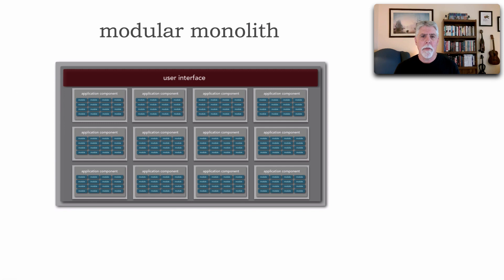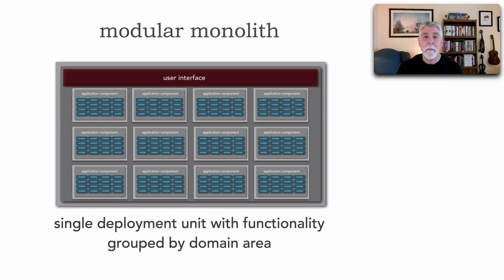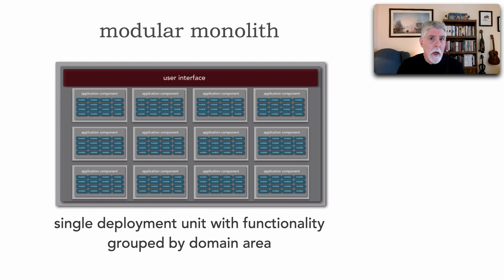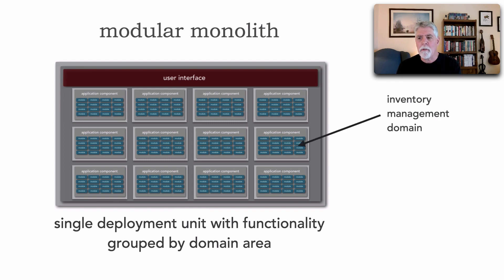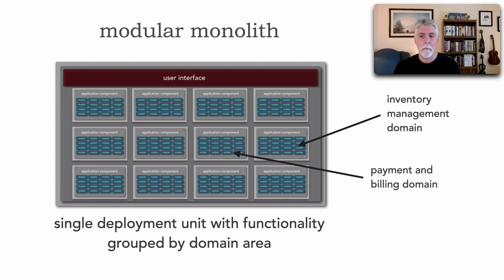The modular monolith is best described as a single deployment unit — all of the code is deployed as a single unit of software — but with functionality grouped by domain area. As you remember from the prior lesson, the layered architecture grouped functionality by technical categories. Here we're flipping it 90 degrees and grouping things by domain area, for example containing all functionality from user interface down through persistence for inventory management, or a payment and billing domain.